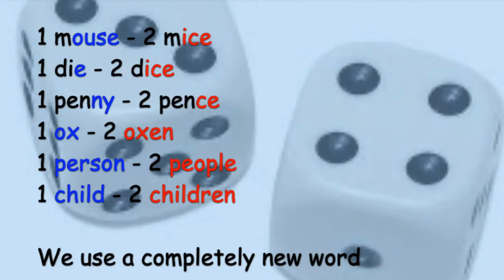One mouse, two mice; one die, two dice; one penny, two pence; one ox, two oxen; one person, two people; one child, two children. We use a completely new word.